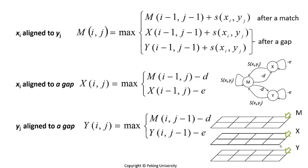When the previous position was already aligned to a gap, the gap is extending, and thus a penalty of e is subtracted. Similarly for the Y sequence, when the gap is extending, a penalty of e is subtracted.